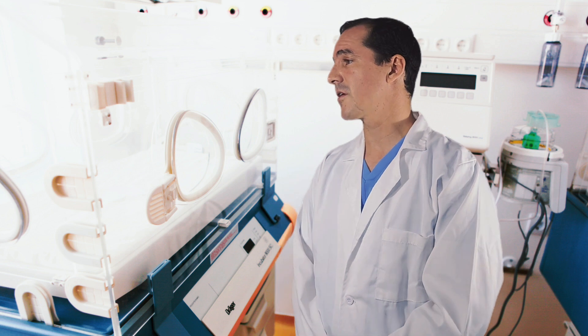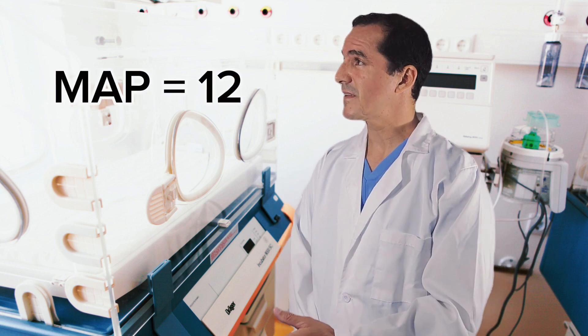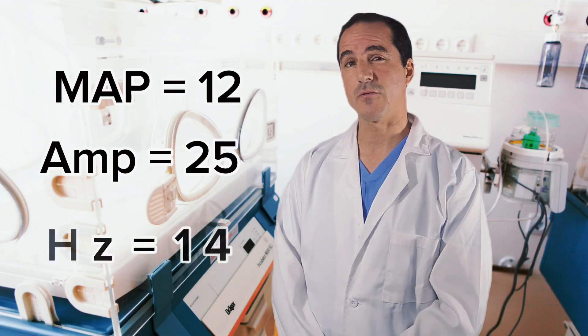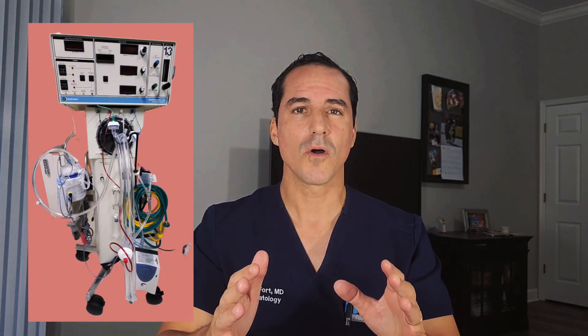Good question. Given the current settings that we have on mechanical ventilation, we should probably start at a MAP of 12. Let's give it an amplitude of 25 and hertz of 14. So why did Dr. Ford choose those settings? We're going to be talking about that a little bit later, but why don't I explain the oscillator to you?